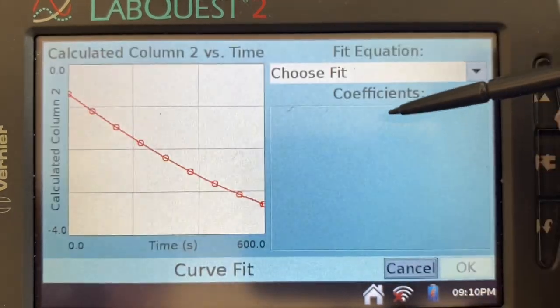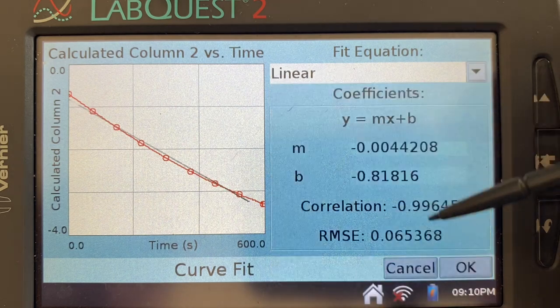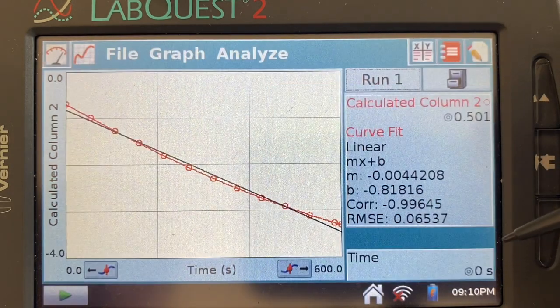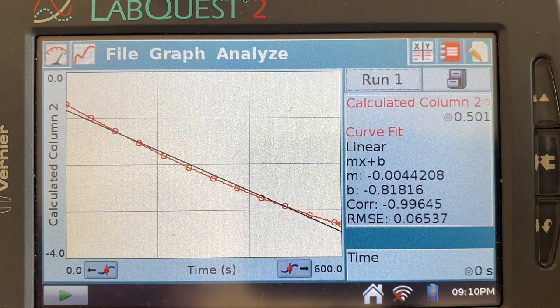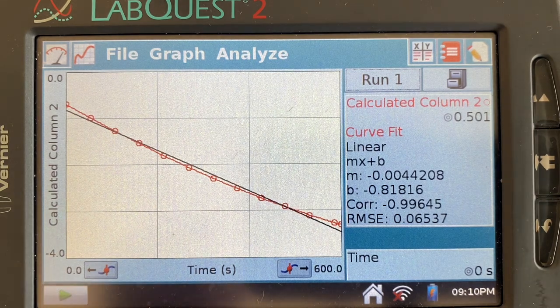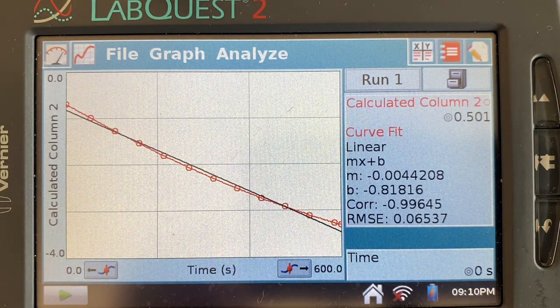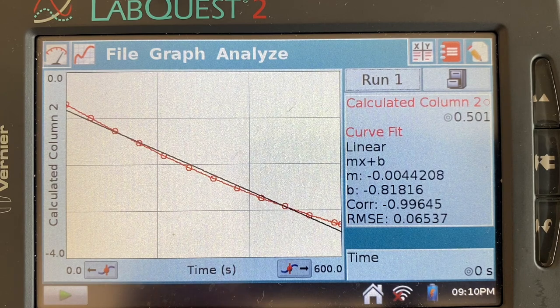So let's make sure we get a little line on there. Okay. All right. So I can see by this that it is pretty linear. Again, not perfect, but of course it's lab data, so you have to expect a little bit of inaccuracy.